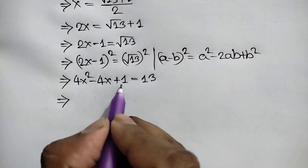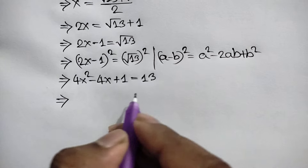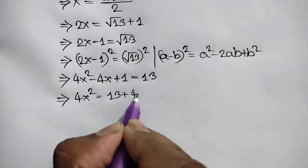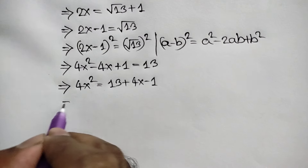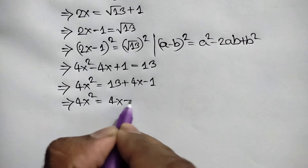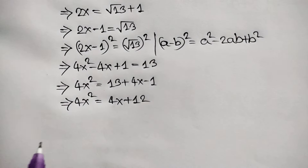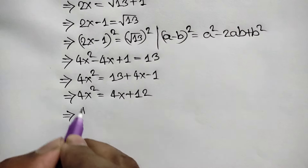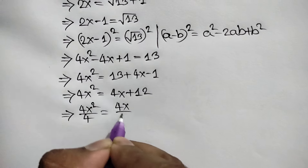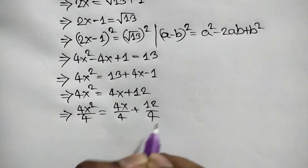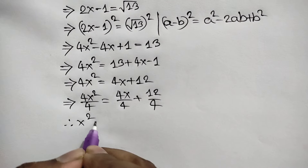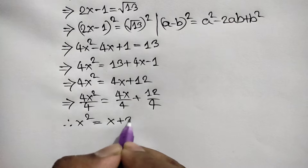Taking negative 4x and 1 to the right side, we get 4x² equals 13 plus 4x minus 1, or 4x² equals 4x plus 12. Now dividing both sides by 4, we get x² equals x plus 3.